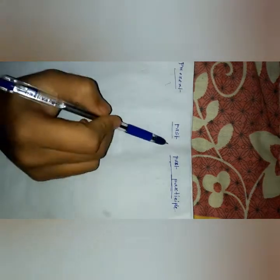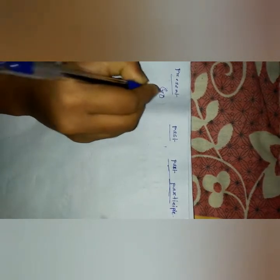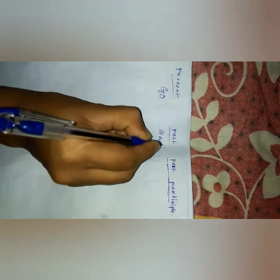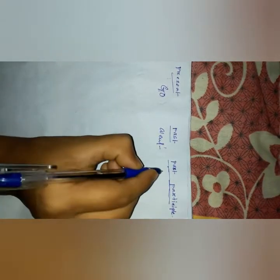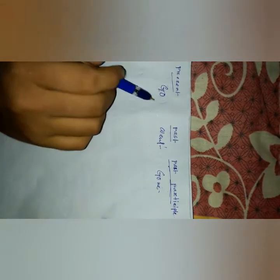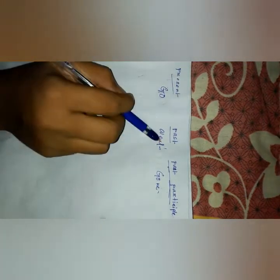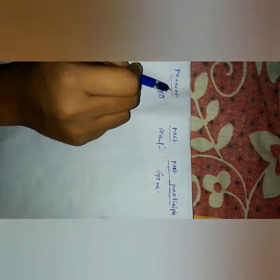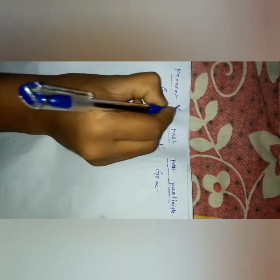Let me explain present, past, and past participle forms. For example, take the verb 'go': present is 'go', past is 'went', and past participle is 'gone'. So it's go, went, gone.